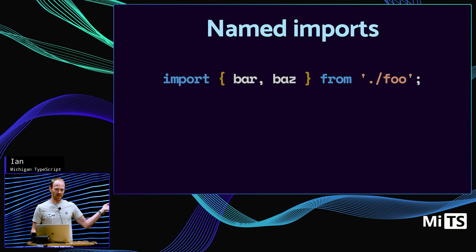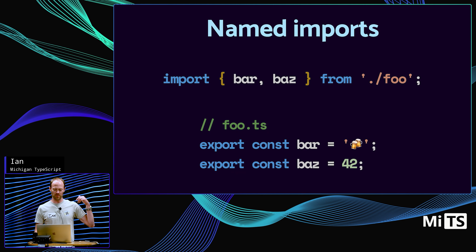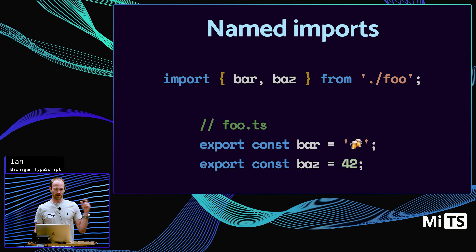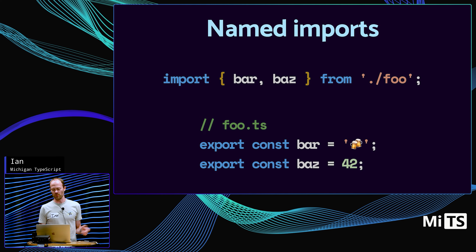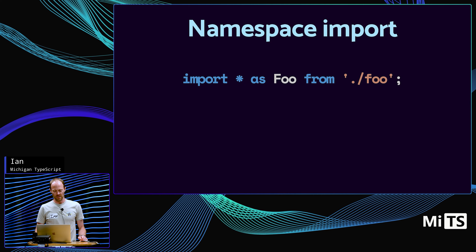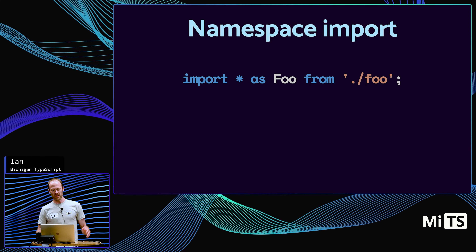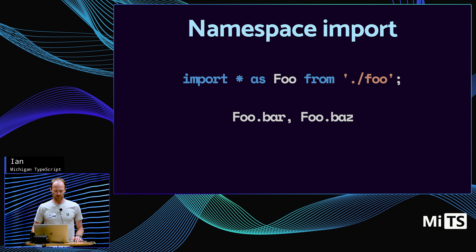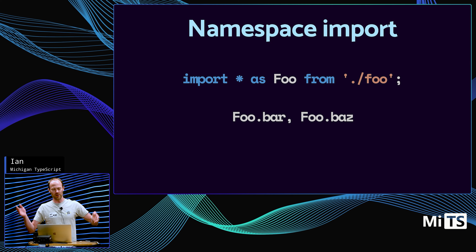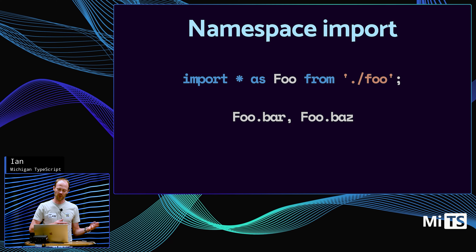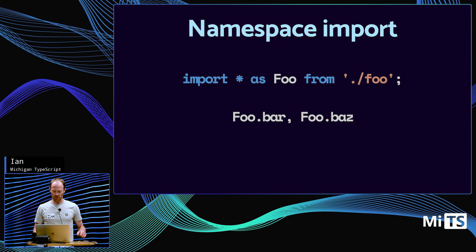There are named imports. If you have a file foo.ts, maybe there's a bar and a baz export. These are named, so you have to use the same names in the curly braces when you import them. You can also group those up into a namespace — import star as foo — and then you can do foo.bar and foo.baz. You use the star instead of listing names in curly braces.